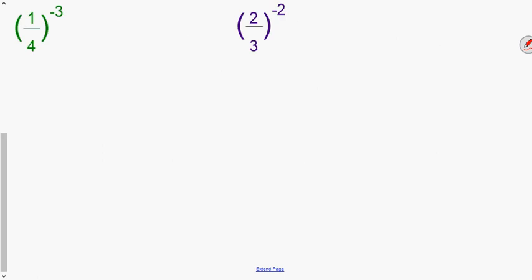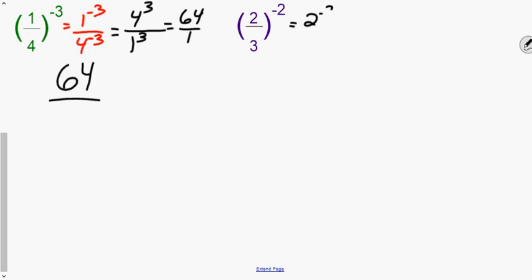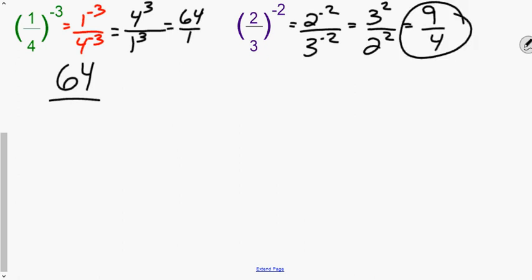This is the only real trick question. You cannot divide by zero, so zero to a negative exponent is undefined. Other than that, that is the only trick question you have to look for. So when you have a problem like this, what we will do is we will apply the power to all parts. Anything with a negative exponent, we flip. So start on the top. One to the negative three, we flip it. Four to the negative three, we flip it. Four to the third becomes 64 over one, or we say it's just 64. Go ahead and try the last one quick. Hopefully you got nine over four.